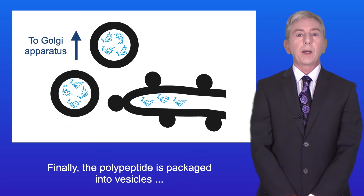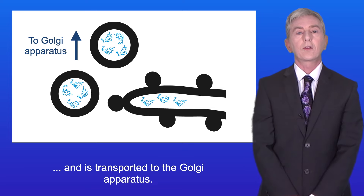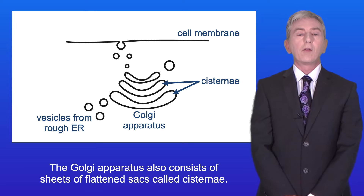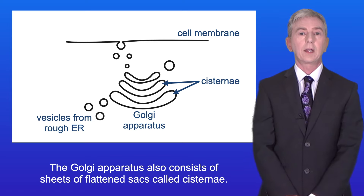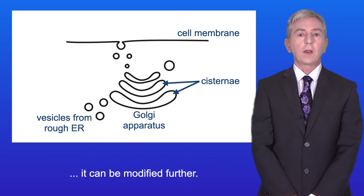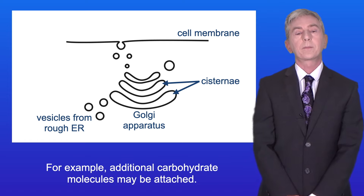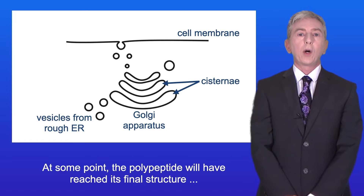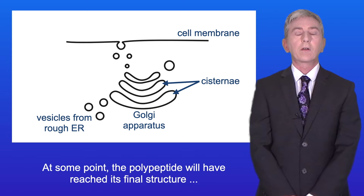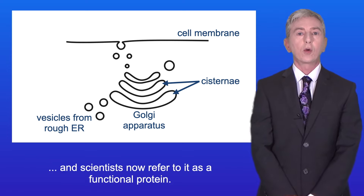Finally, the polypeptide is packaged into vesicles and is transported to the Golgi apparatus. The Golgi apparatus also consists of sheets of flattened sacs called cisternae. As the polypeptide makes its way through the Golgi apparatus it can be modified further — for example, additional carbohydrate molecules may be attached. At some point the polypeptide will have reached its final structure and scientists now refer to it as a functional protein.